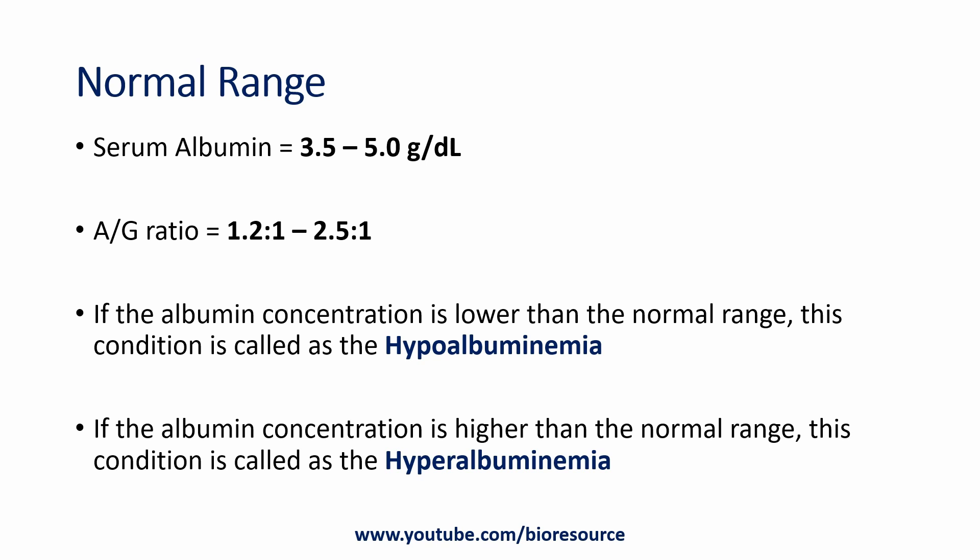The expected normal range for serum albumin is 3.5 to 5 grams per deciliter, and for the albumin-to-globulin ratio it is 1.2:1 to 2.5:1. If the albumin concentration is lower than the normal range, this condition is known as hypoalbuminemia, and if it is higher than the normal range, it is called hyperalbuminemia.